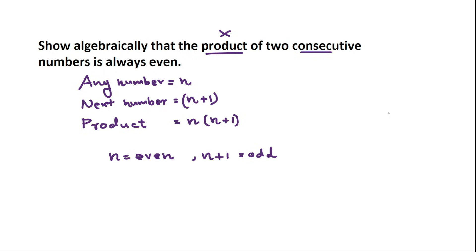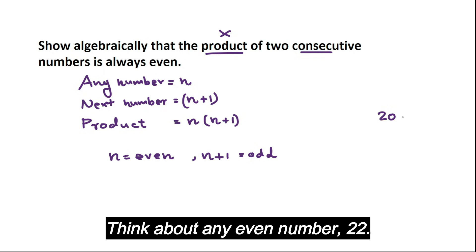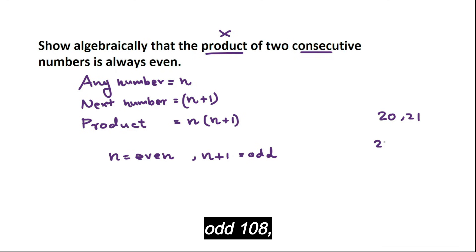Because if you think about any even number, say 20, the next one is odd. Think about any even number, 22, next one is odd. 108, next one is odd.